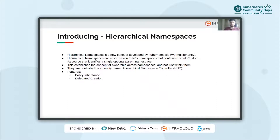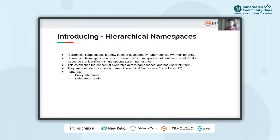In its simplest form, a hierarchical namespace is a regular Kubernetes namespace that contains a small custom resource that identifies a single optional parent namespace. This establishes the concept of ownership across namespaces, not just within them. Hierarchical namespaces allow users to organize namespaces into trees and apply policies to an entire tree or sub-tree. A policy object applied in a root or parent namespace is replicated and applied to all child namespaces automatically.